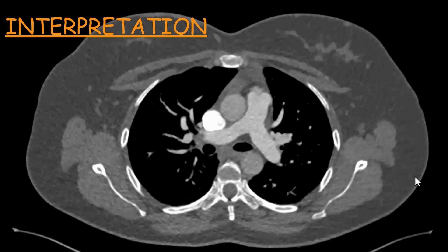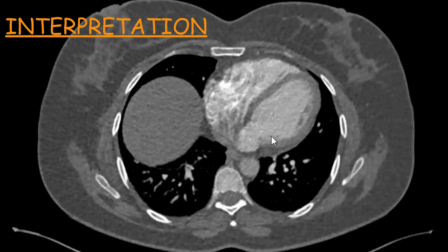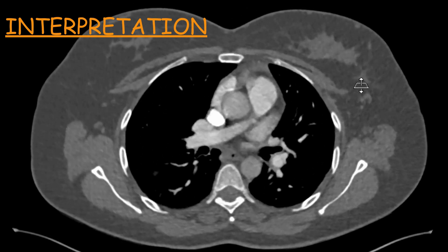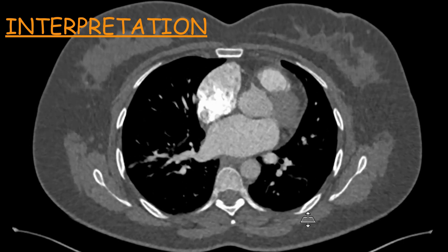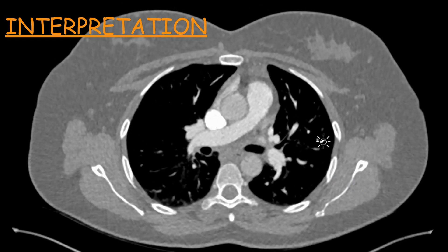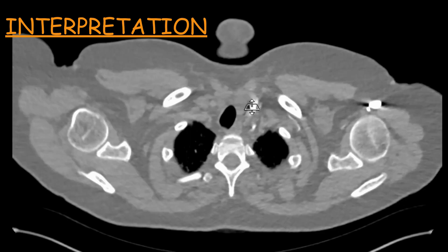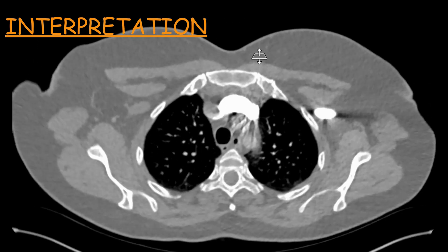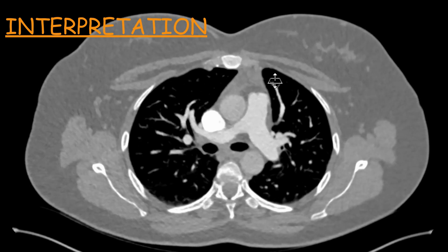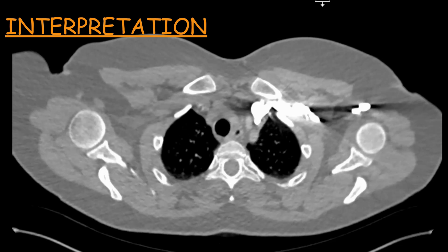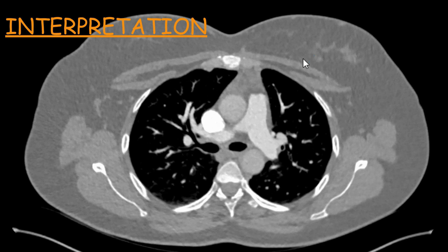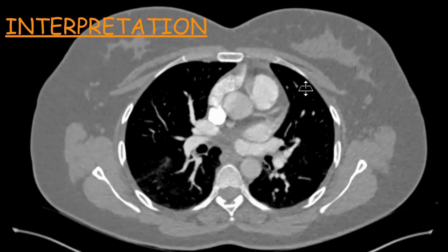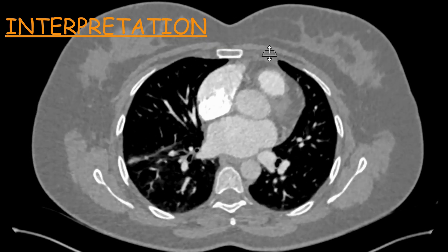How to assess the pulmonary tree for any embolism: I would generally start with the main pulmonary trunk, looking through it starting from its outflow tract, then going up the right and left main divisions, the lobar divisions on either side, and then segmental and subsegmental. Sometimes you're not able to see subsegmental divisions, and in that case you need to mention in your report to what level you could say with certainty that there were no filling defects or otherwise.